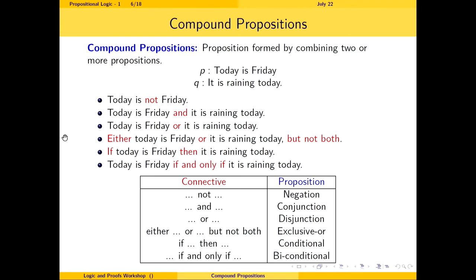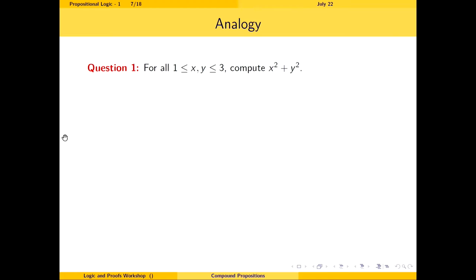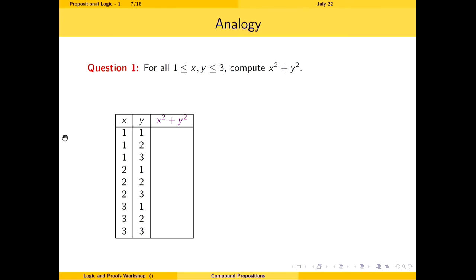Setting propositional logic aside briefly — consider computing x² + y² for all values of x and y between 1 and 3. We enumerate all pairs (1,1), (1,2), (1,3), and so on, then evaluate the expression for each pair. Similarly, given two propositions P and Q, to compute a compound proposition like mixture(P, Q), we ask what values P and Q can take — true or false — form all possible pairs, and evaluate based on the connective used.